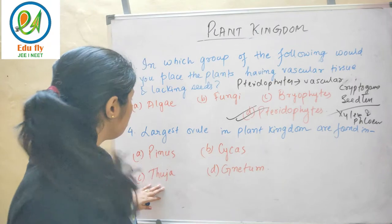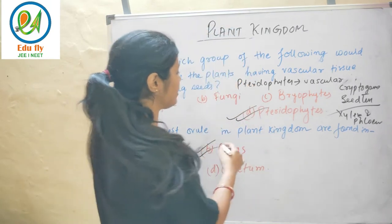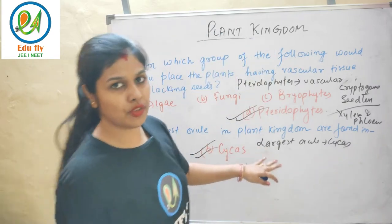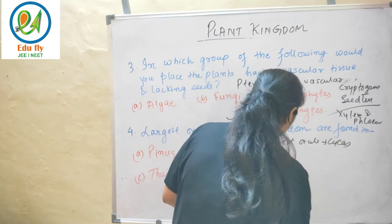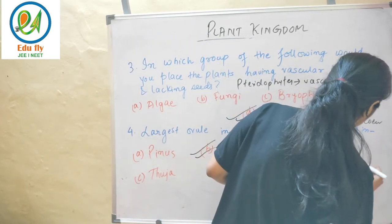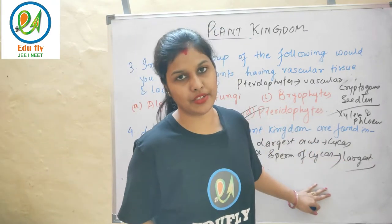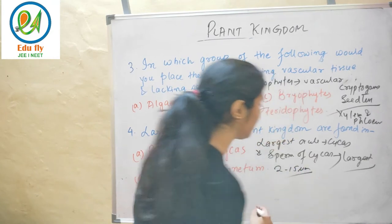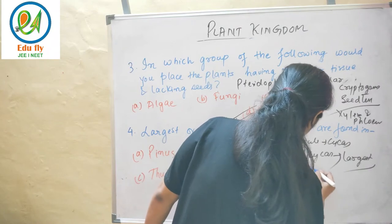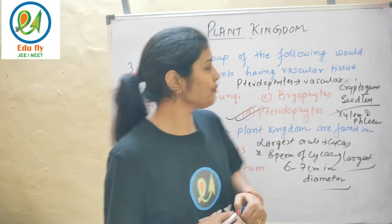The largest ovule in the plant kingdom belongs to Cycas. The answer is Cycas. The largest ovule is found in Cycas, and also the largest sperm is from Cycas. The size of the Cycas ovule is about 6 to 7 centimeters in diameter. This is important information you should know.